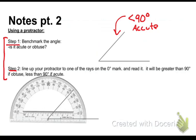And that comes in handy with step two. Step two is to line your protractor up to one of the rays on the zero degree mark. Now there are two zero degree marks. There's a zero degree mark located here and a zero degree mark located here. We have 90 degrees dead center of course. Now there's two lines located on your protractor. There's one up here and one here.